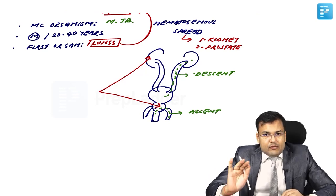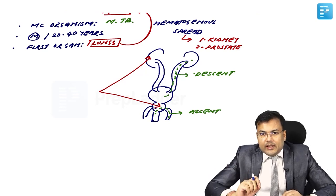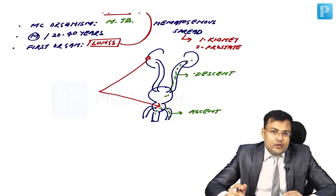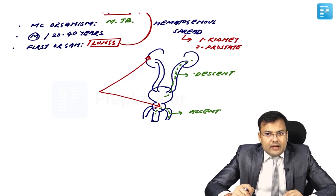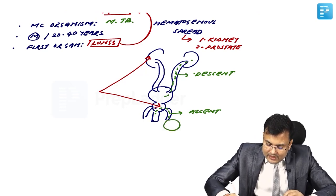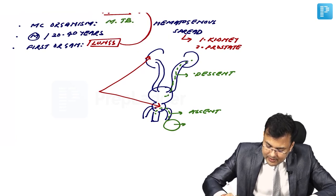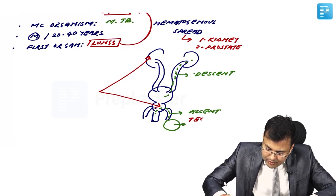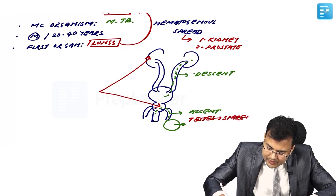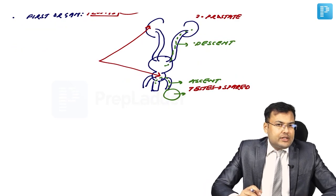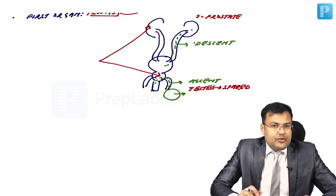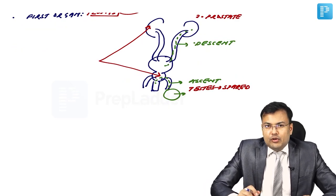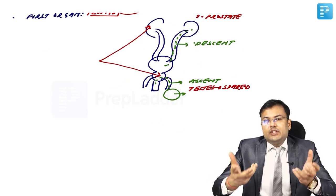One organ is missing from the diagram and is spared in genitourinary tuberculosis — the testis. The testis is spared in genitourinary tuberculosis.